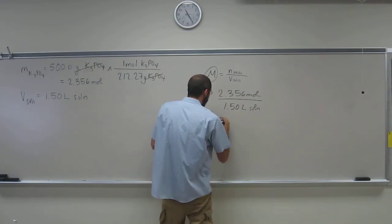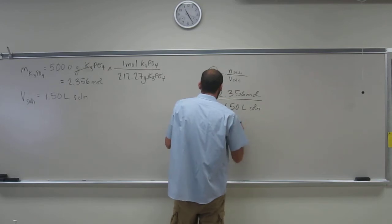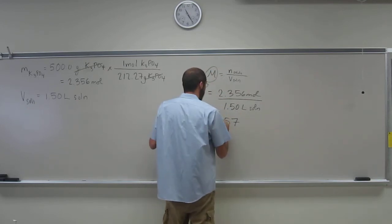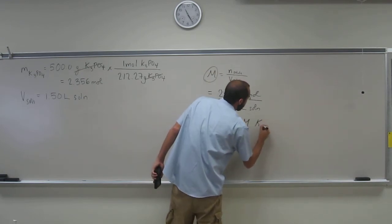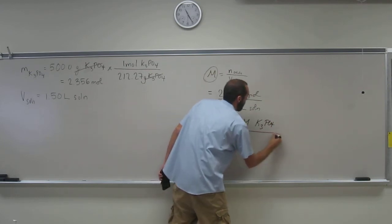So what did you guys get? 1.57. 1.57. And good, because it's only three significant figures, right? 1.57 molar. And you could go so far as to say K3PO4. That's it.